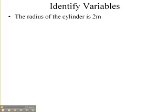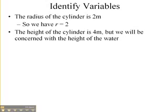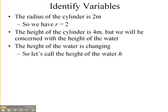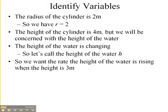So first thing we're going to do is identify our variables. The radius of the cylinder is 2 meters, so let's call the radius r, and then we have r is 2. The height of the cylinder is 4 meters, but the height of the cylinder is not really what we're talking about. We're actually concerned with the height of the water. So let's make that a variable, and we'll call the height of the water h. Now we want the rate the height of the water is rising when the height of it is 3 meters. So what we want is dh/dt when h is equal to 3.